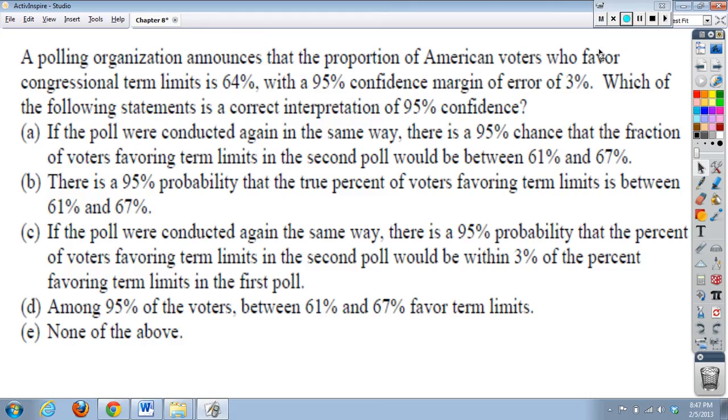Number three, a polling organization announces that the proportion of American voters who favor congressional term limits is 64%, with a 95% confidence margin of error of 3%. Which of the following statements is a correct interpretation of 95% confidence? Now, this is one thing that I've caught you guys kind of messing up on, interpreting the confidence level itself versus interpreting the confidence interval, and the interval would be created by these two numbers, 64% plus or minus 3%, okay? That's not what it's asking for here. It's not looking to interpret, you know, all the way from 61% up to 67%. It's asking you to interpret, what does the 95% mean?